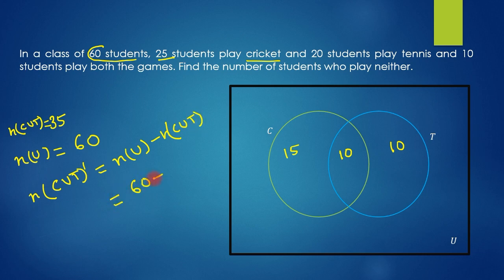That will be 60 minus 35, which is equal to 25. So 25 students do not play any game. Thanks for watching.